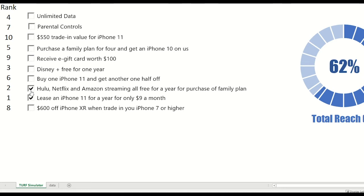Let's also add the third most popular promotion, which is Disney Plus. But as you can see, my reach has increased only a tiny bit — only three percentage points. How can that be when Disney Plus was the third most popular? If I uncheck Hulu and only keep the most popular promotion and Disney Plus, even with these two I'm appealing to 64% of the market. The reason is because the people Hulu and Netflix appeal to are likely the same people Disney Plus appeals to, so I'm not gaining new people by offering both.